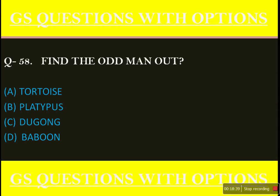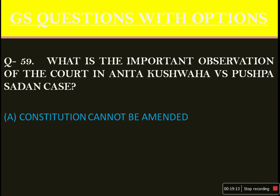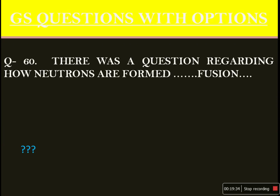Find the odd man out — I was not able to find the answer. I tried to eliminate options based on whether they lay eggs, but two of them lay eggs and two give birth. I also tried to eliminate based on eating habits, but two are herbivores and two are carnivores. If anyone has an idea, please put it in the comment section. There was also a question about the important observation of the court in the Anita Kushwaha versus Pushpa Satan case — one option was 'the constitution cannot be amended,' but I cannot recollect the other three options. If anybody remembers, kindly put it in the comment section. The last question was based on chemistry — how neutrons are formed, with options involving fusion or related processes. If anyone remembers, kindly put it in the comment section.